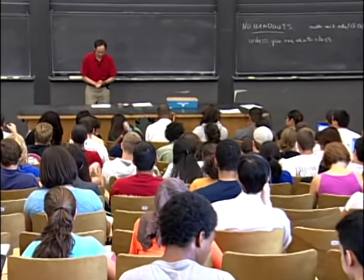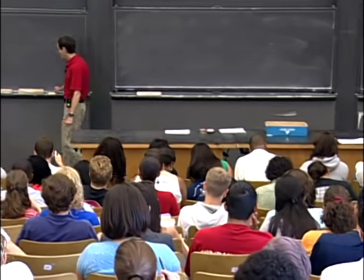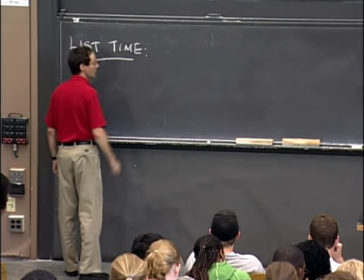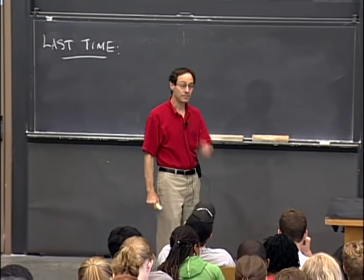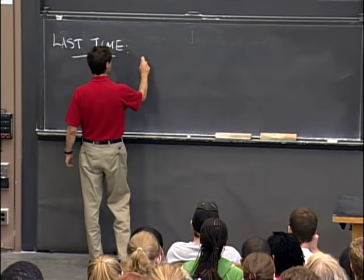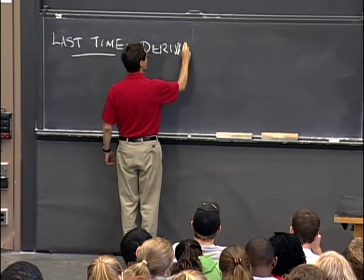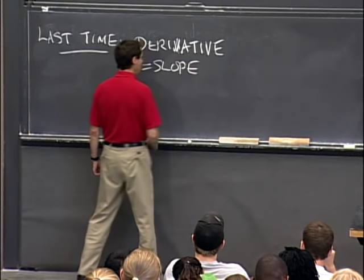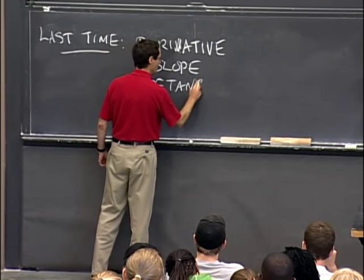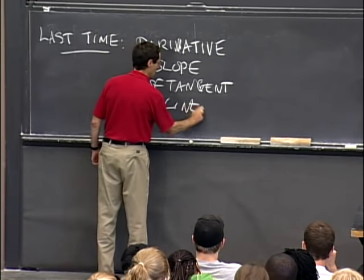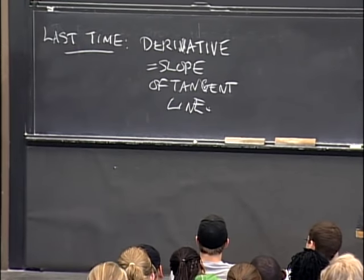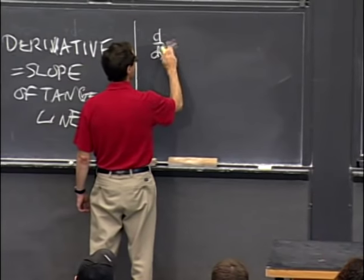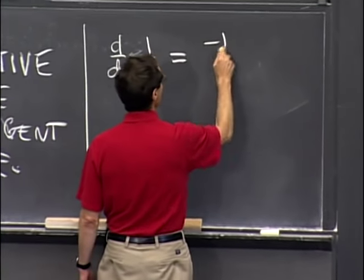I'd like to begin the second lecture by reminding you what we did last time. We defined the derivative as a slope of a tangent line — that was our geometric point of view. We also worked out that the derivative of 1 over x was minus 1 over x squared.